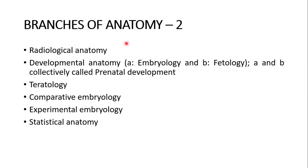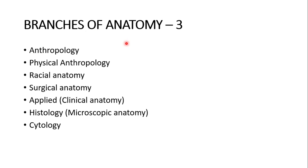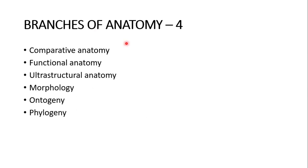Radiological anatomy, developmental anatomy — number A is embryology and number B is fetology. A and B collectively called prenatal development. Teratology, comparative embryology, experimental embryology, statistical anatomy. Next: anthropology, physical anthropology, racial anatomy, surgical anatomy, applied or clinical anatomy, histology or microscopic anatomy and cytology. Next: comparative anatomy, functional anatomy, ultra-structural anatomy, morphology, ontogeny, phylogeny.